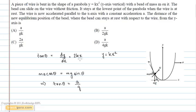Equating both the values of tan theta and solving it, we get x is equal to a upon 2gk which is the distance of the new equilibrium position from y axis.